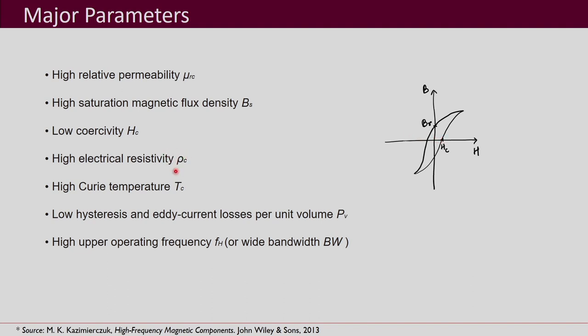The Hc value should be as low as possible. Then high electrical resistivity ρc. Electrical resistivity is important because of eddy currents — whenever we choose a magnetic core, eddy currents will occur and they should be minimized. One way of reducing eddy currents is by laminations, but not all materials support lamination formation as some are brittle. So it is better to have solid cores, but then the resistivity of the material should be high so that eddy currents produced are less.